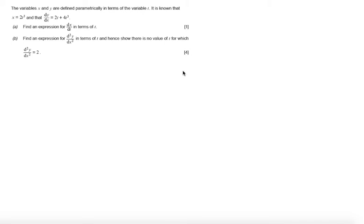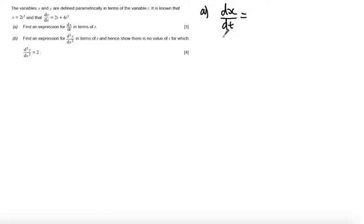Part A asks to find an expression for dx by dt in terms of t. This is fairly straightforward — we're just going to differentiate x with respect to t, which gives us an answer of 6t squared.